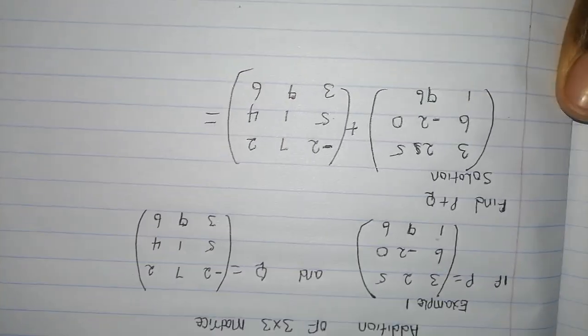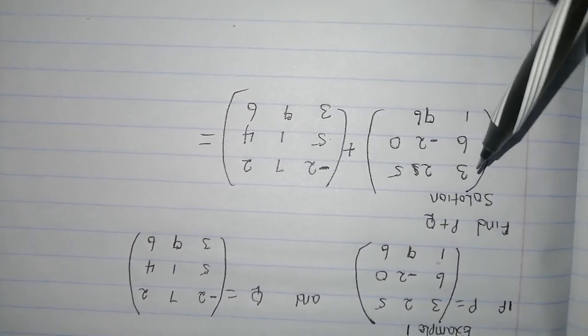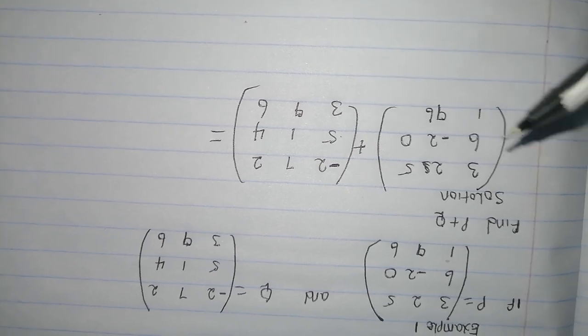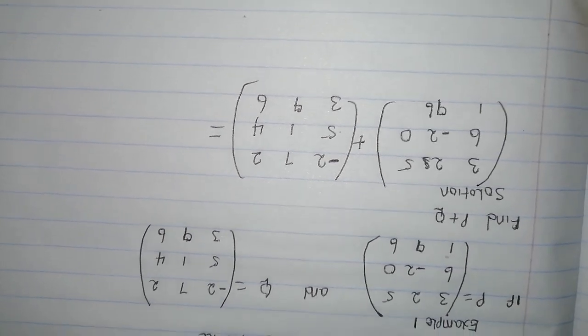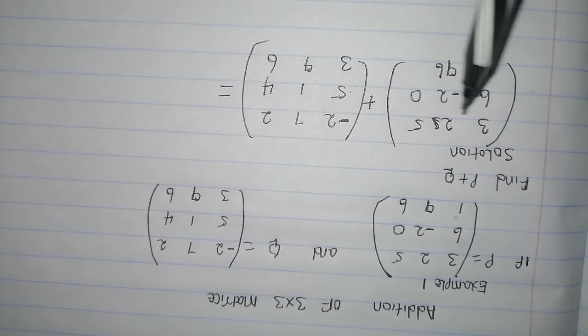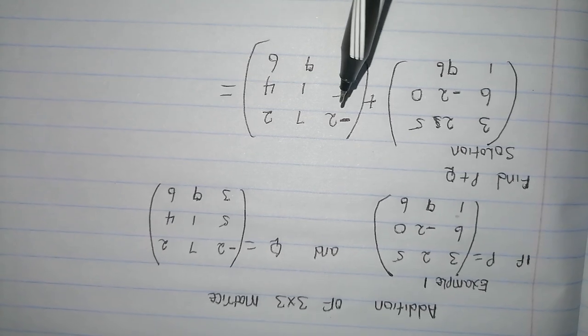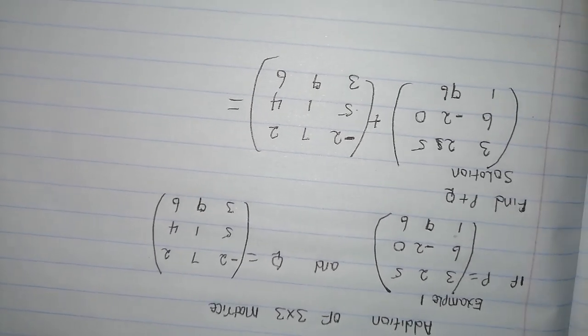So when adding this equation, you take 3 on the first column and on the first row, you add with the 2 in the first column of the first row in the Q matrix.